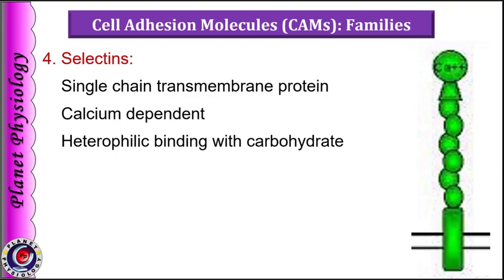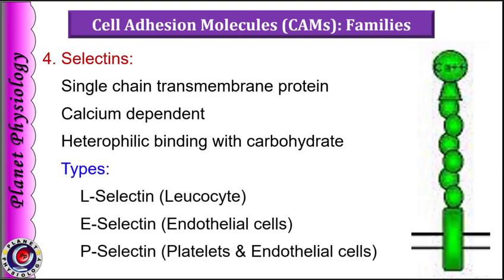Cadherins also establish and stabilize apicobasal cell polarity by preventing lateral movements of membrane proteins, and they aid in formation of tight junctions as well as desmosomes. Now the last category: selectins. The word selectin is derived from selected lectins, and lectins are carbohydrate-recognizing proteins. So these are single-chain transmembrane proteins which show calcium-dependent heterophilic binding with carbohydrates. Based on their locations, three varieties of selectins are known: L-selectin found mainly on leukocytes, E-selectin found on endothelial cells, and P-selectin found predominantly on platelets but also on endothelial cells.